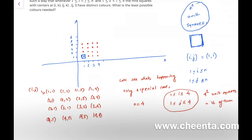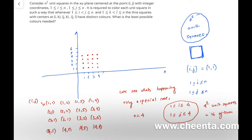Whatever color the point has is the color of the box surrounding it, so right now all of them are red. Now what does the problem want us to do? It says that whenever you pick two numbers i and j, and another two numbers k and l, with i less than j and k less than l, you work with the three squares centered at i comma k, j comma k, and j comma l.